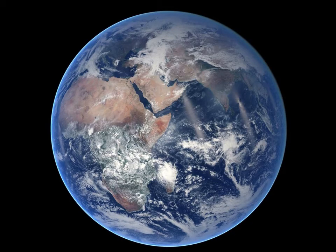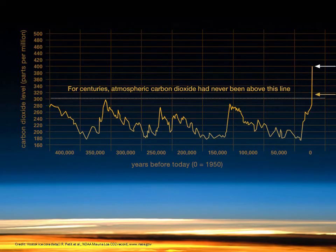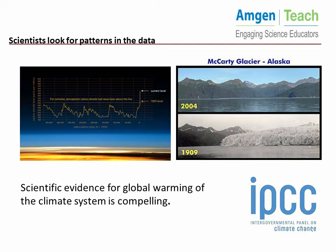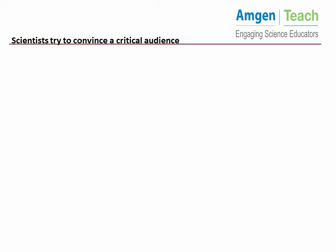Scientists make observations about the natural world. Scientists make measurements — for example, they measure the atmospheric carbon dioxide level. Scientists look for patterns in their data and they come to evidence-based conclusions.